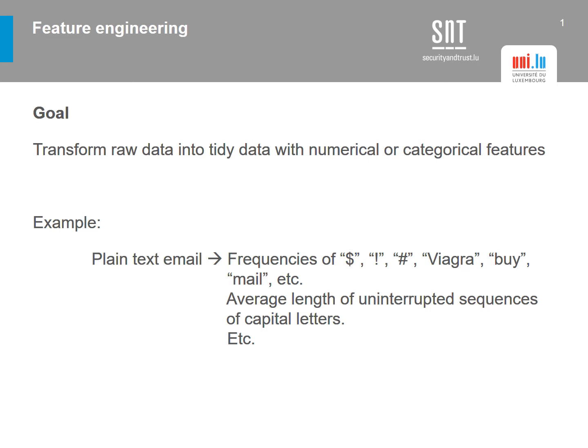We may also want to compute things like the average length of uninterrupted sequences of capital letters, because we can come up with a lot of features. Generally, we will need to improve by making iterations on our feature engineering to achieve a better representation of our data through the features we decide on.